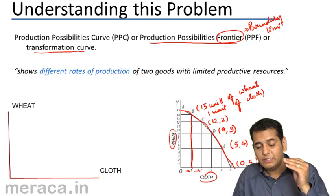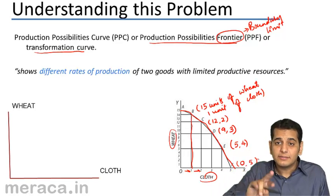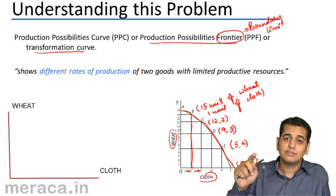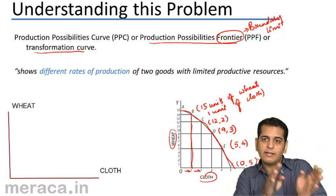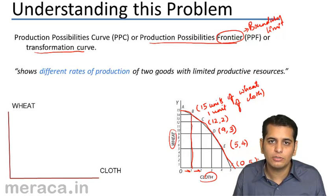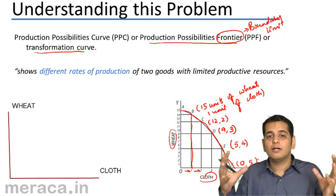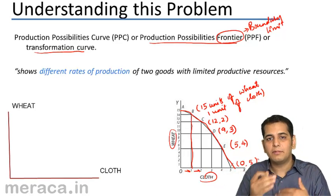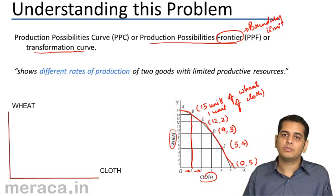If you observe, we are continuously decreasing the production of Wheat, and that is getting converted — transformed — into production of Cloth. Wheat is getting transformed into Cloth. It is not physically being transformed, but we are reducing the production of Wheat, which frees up idle resources so we can produce Cloth. In place of Wheat, Cloth is coming up. Thus, we call it the Transformation Curve.